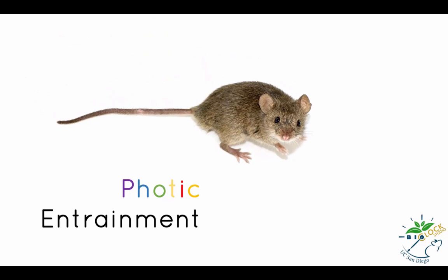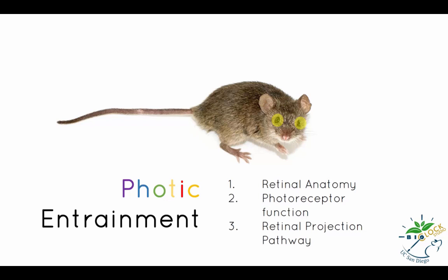To understand photic entrainment, it is critical that we understand the photoreception system within mammalian eyes. In this video tutorial, we would like to introduce the anatomical features of the mammalian retina, photoreceptors, and the pathway through which the retina translates light information to other regions of the brain.